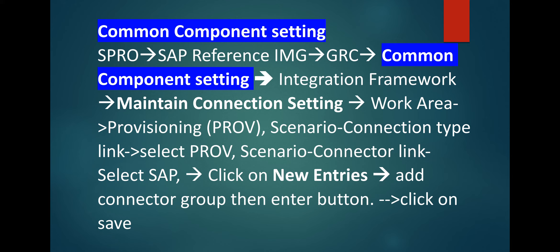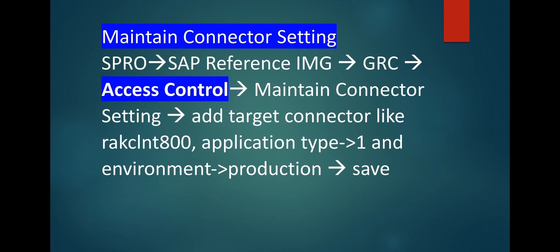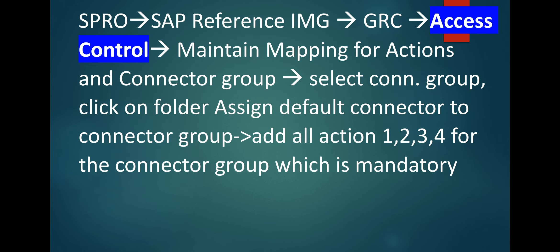No need to remember these paths — once you log in and start clicking the following links, you will get to know what to do. Next is maintain connector setting. Go to access control, then maintain connector setting, add target connector like RAKCL and T800, application type 1, and environment. If you are doing in production, you can select production and save. Next, go to access control and maintain mapping for action and connector group — select connector group, click on folder, assign default connector to connector group.